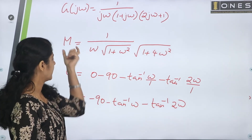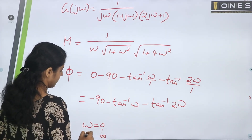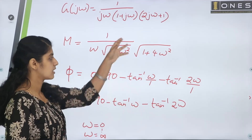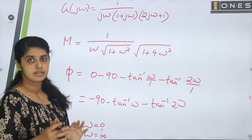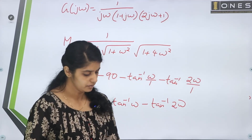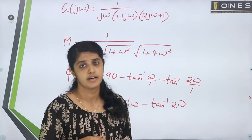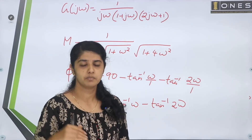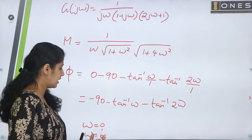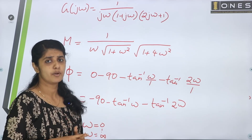Now, we don't need to compute all values. We only need the starting value (ω = 0) and the ending value (ω = ∞) to use the approximated polar plot form.